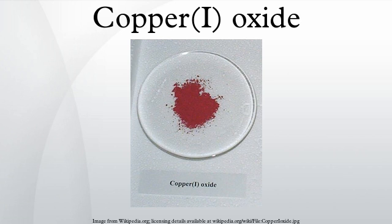Copper oxide, or cuprous oxide, is the inorganic compound with the formula Cu₂O. It is one of the principal oxides of copper. This red-colored solid is a component of some anti-fouling paints. The compound can appear either yellow or red, depending on the size of the particles. Copper oxide is found as the reddish mineral cuprite.